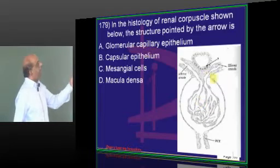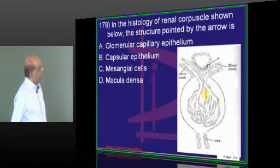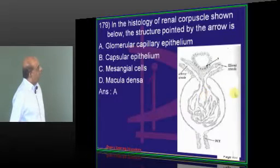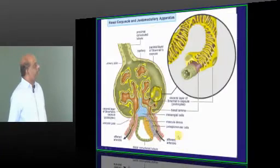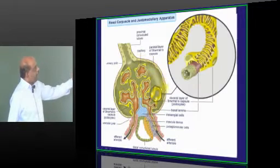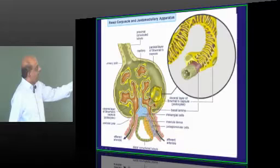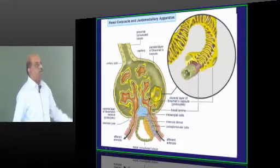Now, renal corpuscle, a structure was shown. The idea is to show this structure, glomerular capillary epithelium. This was the original diagram which was actually missing. So you have parietal cells of Bowman's capsule, and you are having a visceral layer of the Bowman's capsule, that is called podocytes.